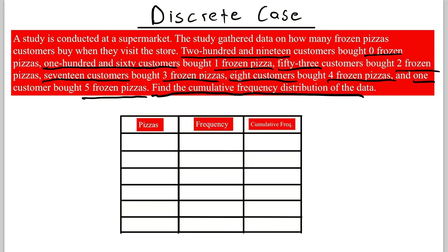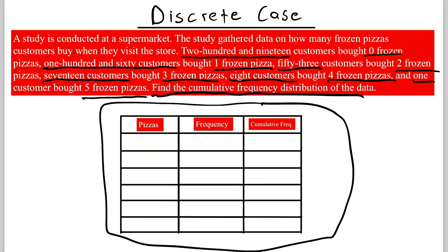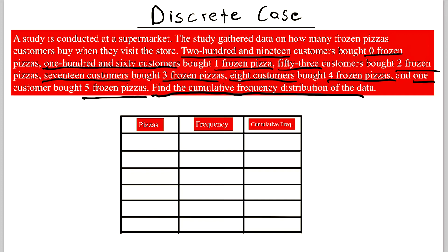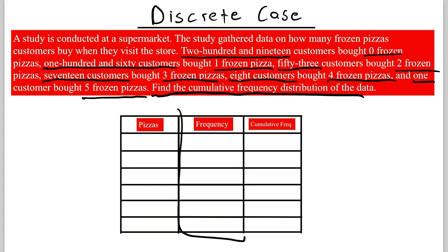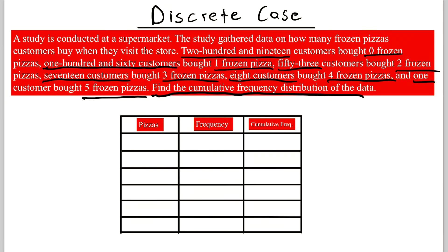All we really need to do to describe the cumulative frequency distribution is to fill in this table. Let's take a look at each column. The first column is the pizzas column — this is the number of pizzas that customers are buying. Then we have the frequency column, which is the number of people buying these different amounts of pizzas. The third column is the cumulative frequency column, which we'll fill in after the first two. In the pizzas column we put zero, one, two, three, four, and five frozen pizzas.